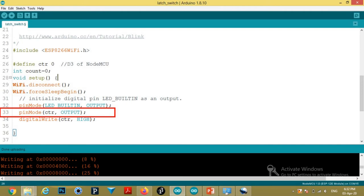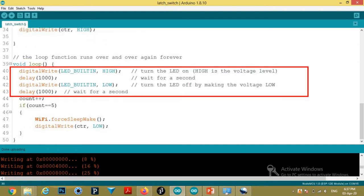33, the CTR pin is declared as output. And in the next line, line number 34, that CTR pin is toggled to high. Then the light will blink for 5 times, and then the CTR pin will be pulled low.